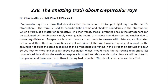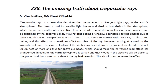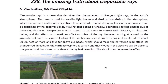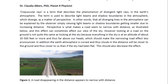Crepuscular rays is a term that describes the phenomenon of divergent light rays in the Earth's atmosphere. The term is used to describe light beams and shadow boundaries in the atmosphere which diverge as a matter of perspective. In other words, all diverging lights in the atmosphere can be explained by the observer simply viewing light beams or shadow boundaries getting smaller due to increasing distance. Perspective is what makes a road seem to narrow with distance, and this effect can sometimes affect our view of the sky.